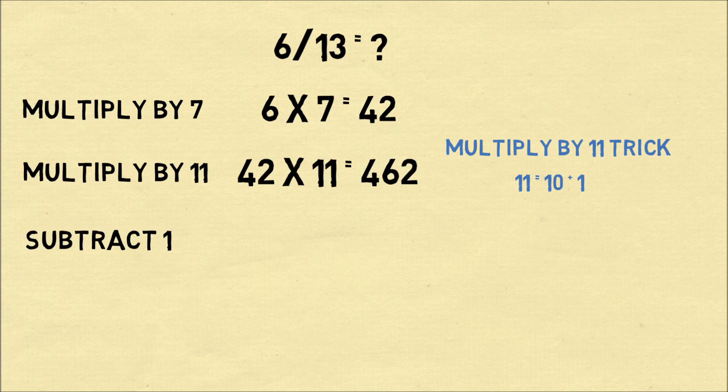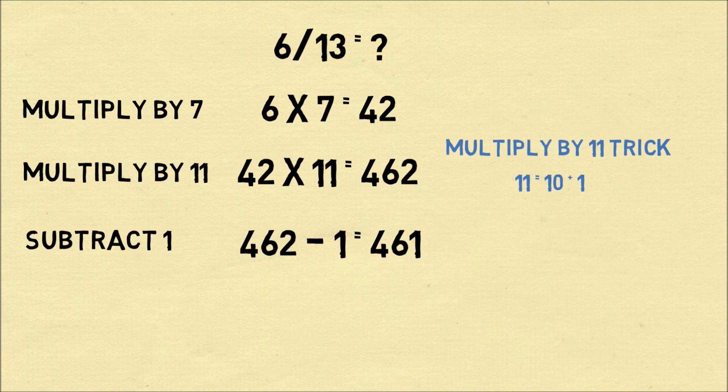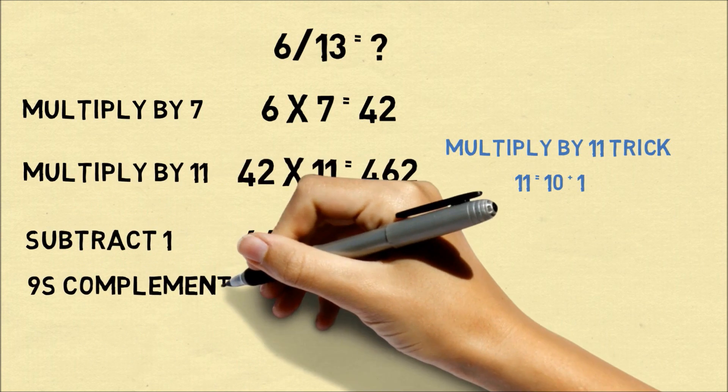The remaining calculations will be easy to do. We subtract 1 from 462 and we get 461. These are the first three digits in our decimal representation.